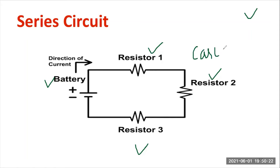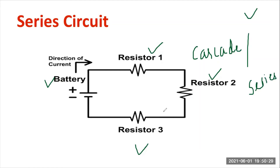This is also known as cascade — cascade or series, both are the same. The same current is going to flow, but the voltage will be different.